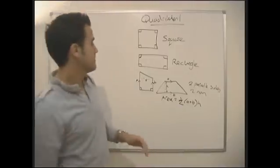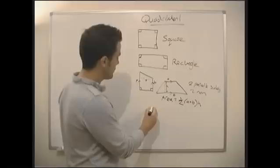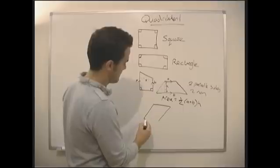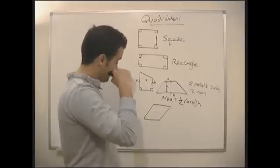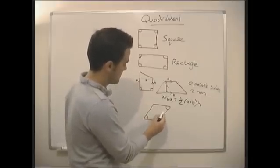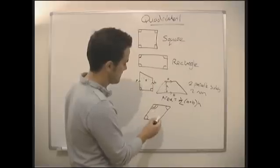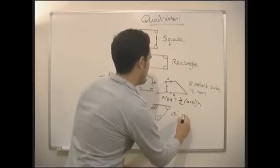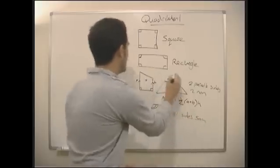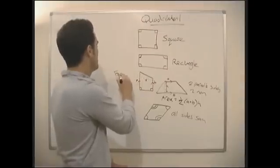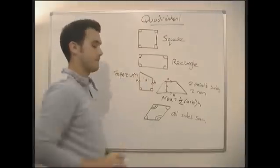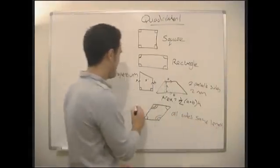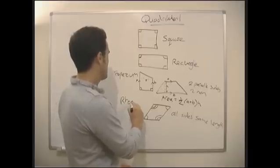More shapes with four sides. We've got a rhombus. The thing with a rhombus: these two angles are the same, and these two angles are the same — and all sides are the same length. That's a rhombus.